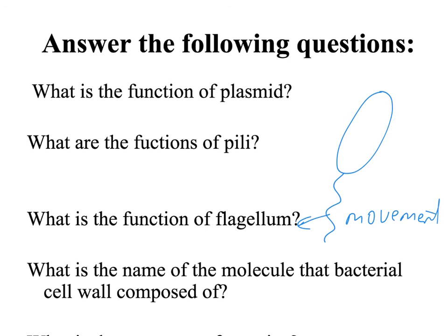What is the name of the molecule that the bacterial cell wall is composed of? Peptidoglycan. And what is the monomer of proteins? Amino acids.